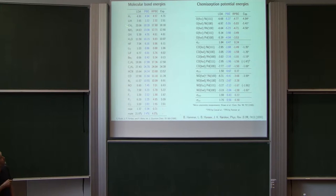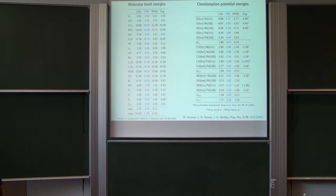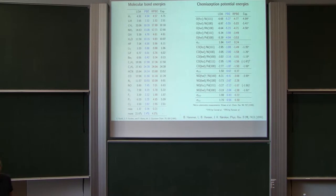Here's an example. When you compare molecular bond energies with LDA, you have errors of 1.4 eV. If you use PBE, it's 0.3 eV. If you use RPBE, it's 0.2 eV. For bonding at surfaces, errors with LDA are around 2 eV, half an eV with PBE, and 0.3 eV with RPBE. So that's information you can try to collect, but there's no real systematic theory or understanding behind this choice.